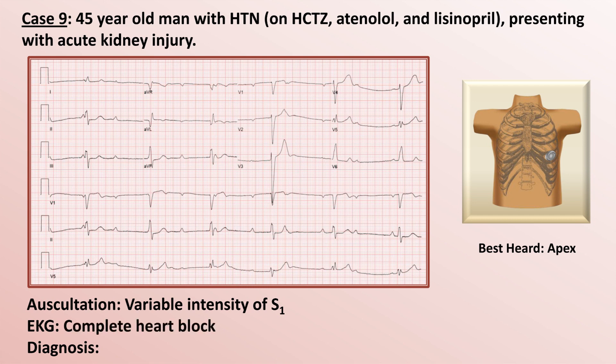The variable intensity of S1 is a direct consequence of the heart block. The intensity of S1 is largely dependent upon the strength and velocity of mitral valve closure, which itself depends on the relative pressures in the LA and LV at the onset of ventricular contraction. Those relative pressures vary depending upon how soon after the atria contract that ventricular depolarization occurs.